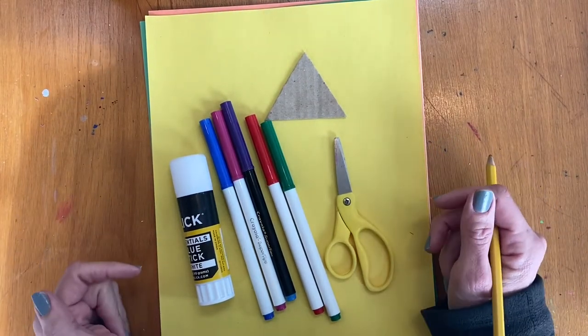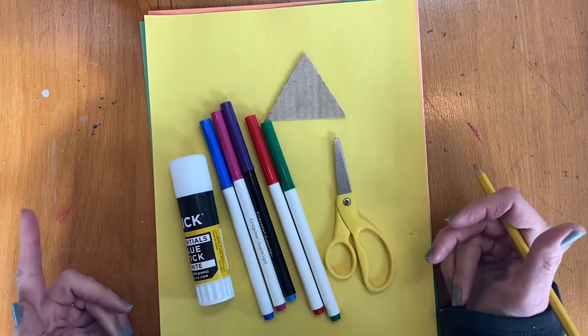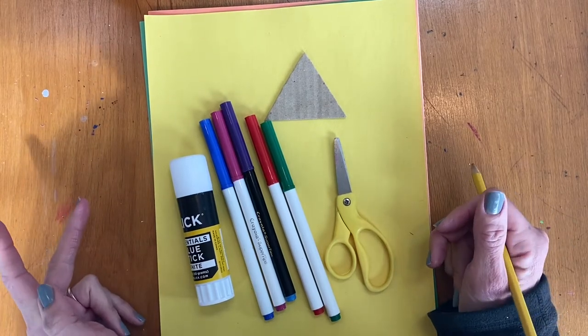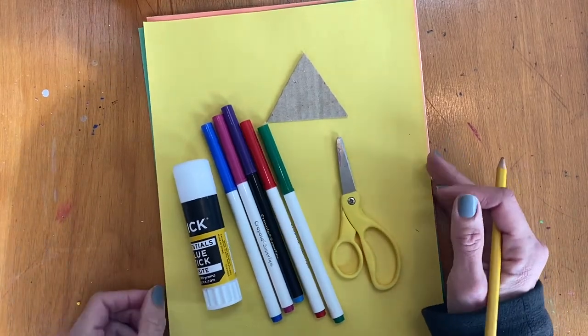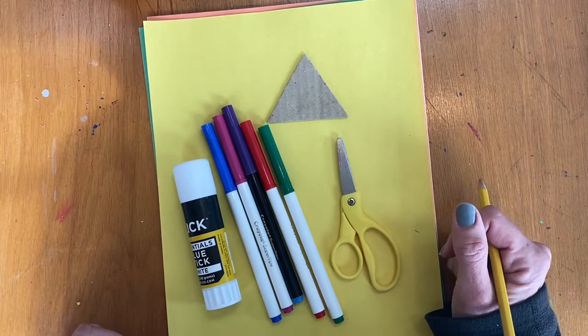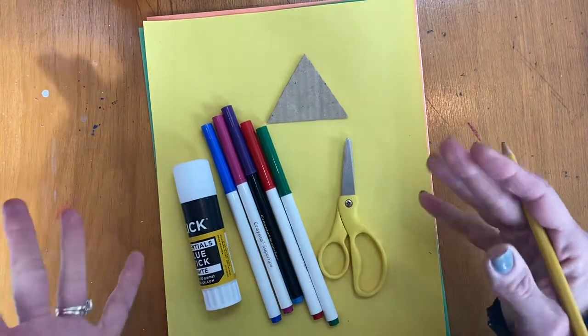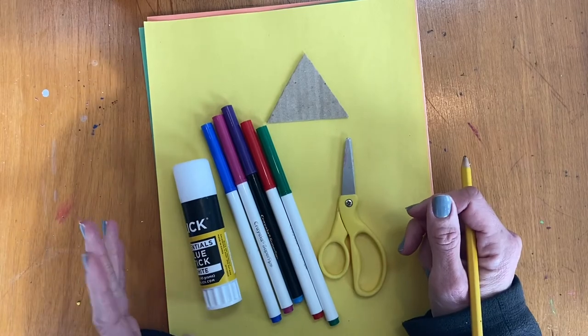What we're going to do is make a musician using shapes and instruments. In school we're using the shape of stars because we're making these for a rock star display. But you guys at home can do a different shape if you want to.